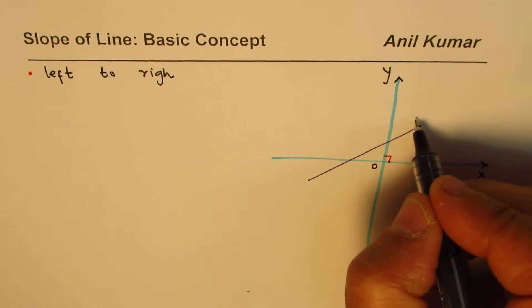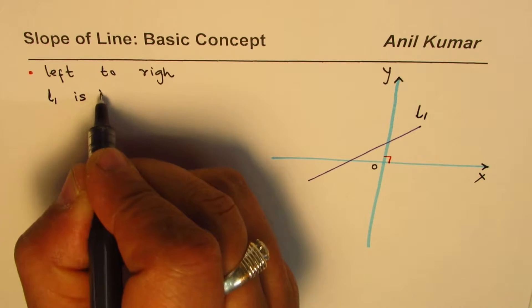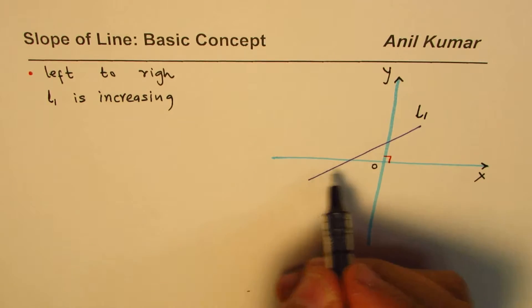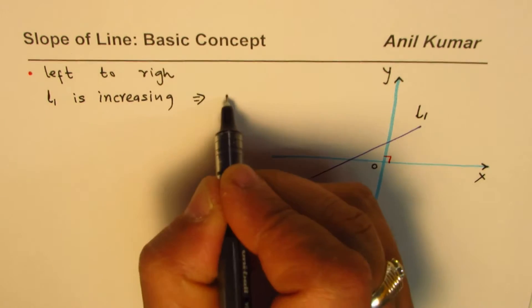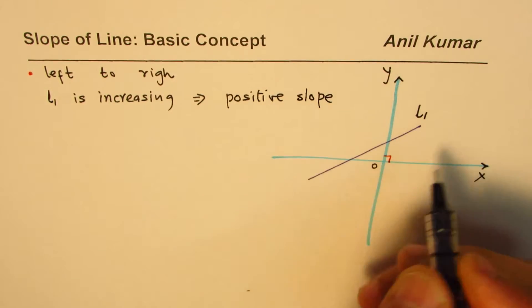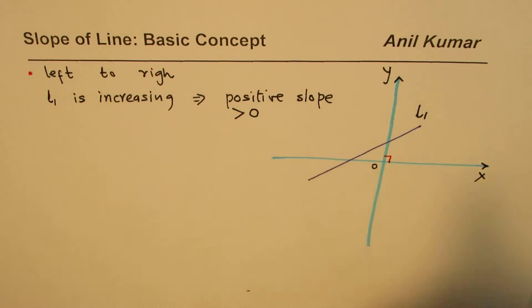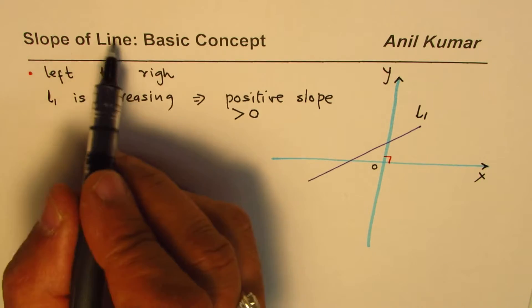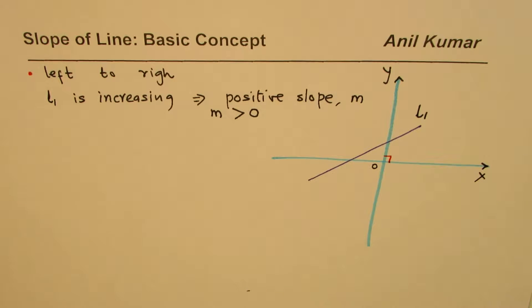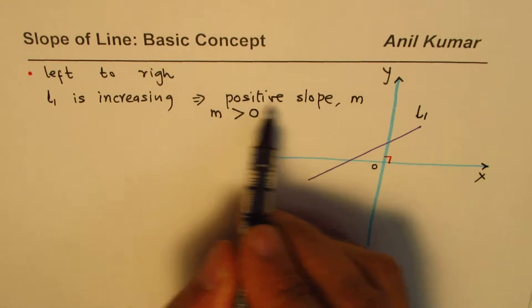When we see from left to right, we find that this line, let me call this line as line 1. We say line 1 is increasing. Since it is increasing as we move from left to right, we also say it has a positive slope. Positive slope means greater than 0. Normally we'll designate slope by the letter M.